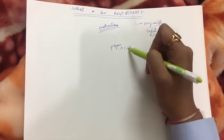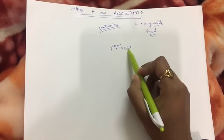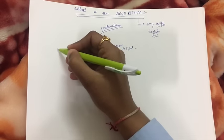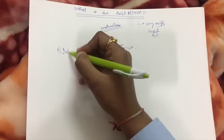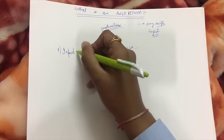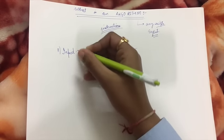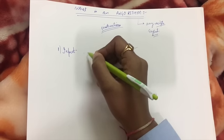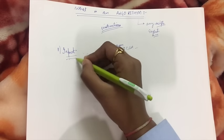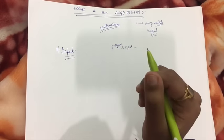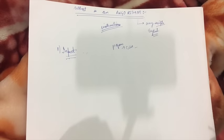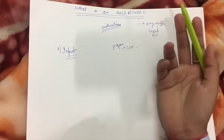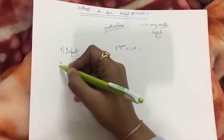There are certain criteria that an algorithm has to follow. First of all is input - there must be zero or more quantities that are externally supplied. When will it be zero? Suppose I have to print 'Hello World', then there will be no input given to our algorithm. And suppose I want to find the sum of two numbers, I'll give two inputs.